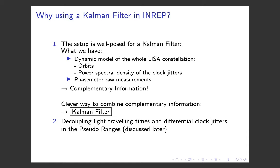Why should we use a Kalman filter in INRIP? First of all, the setup is well-posed for a Kalman filter, because what we have in hand is on one side a dynamic model of the whole LISA constellation. We know the orbits and we also have the power spectral density of the clock jitters, because they can be measured on Earth before the launch of the mission. On the other side, we have the phase meter raw measurements, and these two packages of information constitute complementary information. A clever way to combine complementary information is to use a Kalman filter.